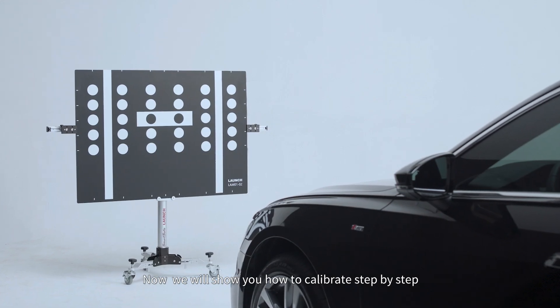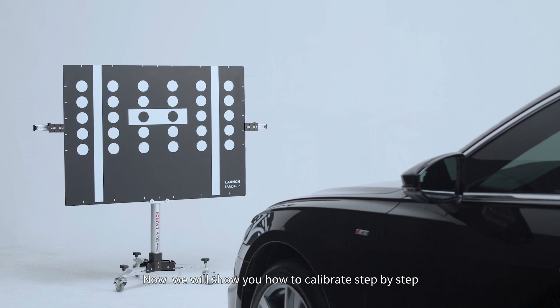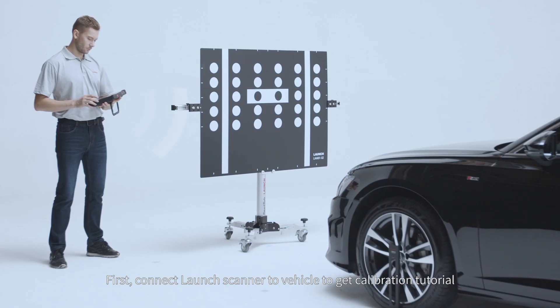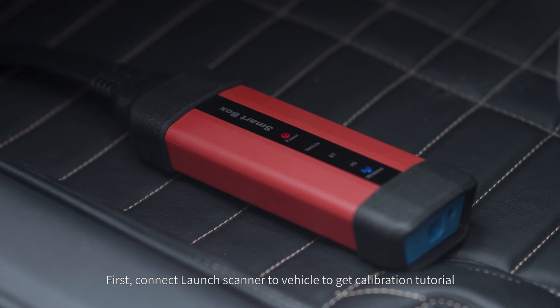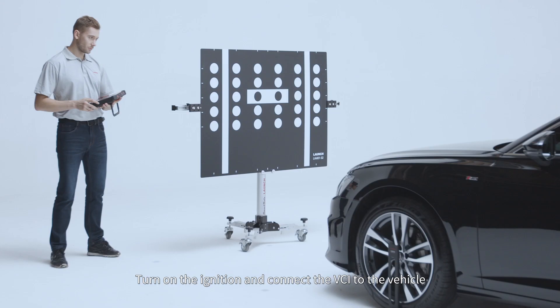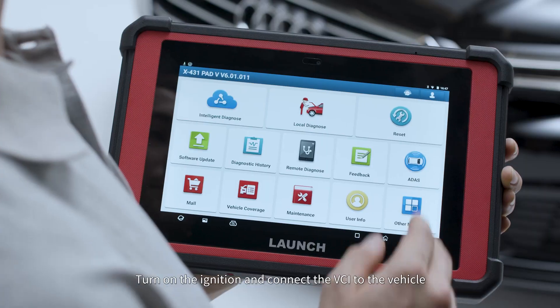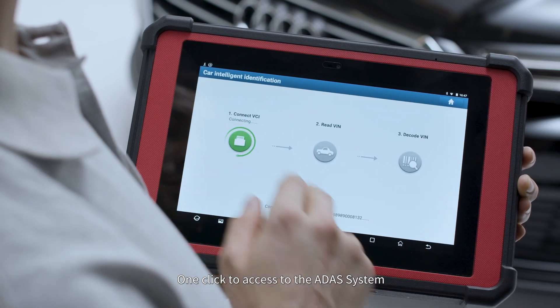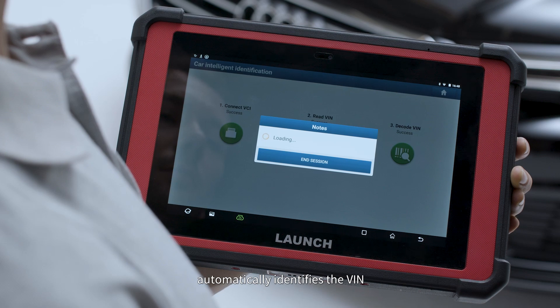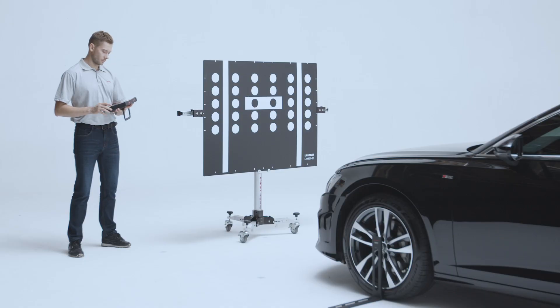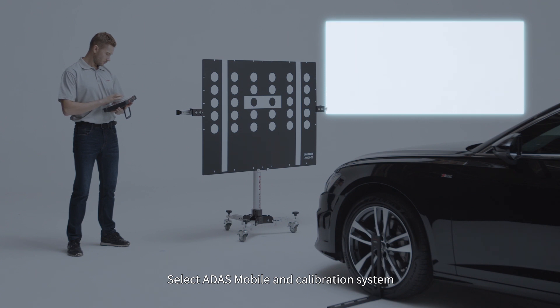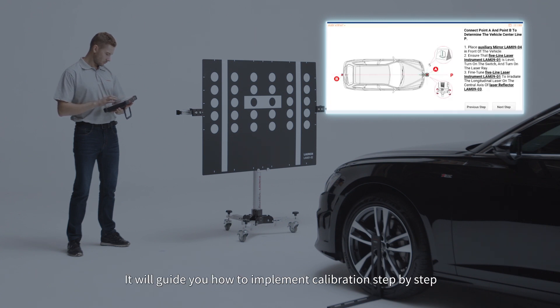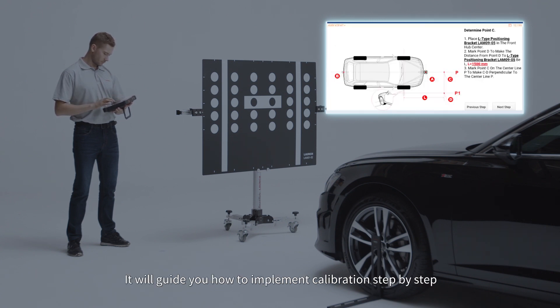Now we will show you how to calibrate step-by-step. First, connect Launch Scanner to vehicle to get calibration tutorial. Turn on the ignition and connect the VCI to the vehicle. One click to access the ADAS system automatically identifies the VIN. Select ADAS Mobile and Calibration System. It will guide you how to implement calibration step-by-step.